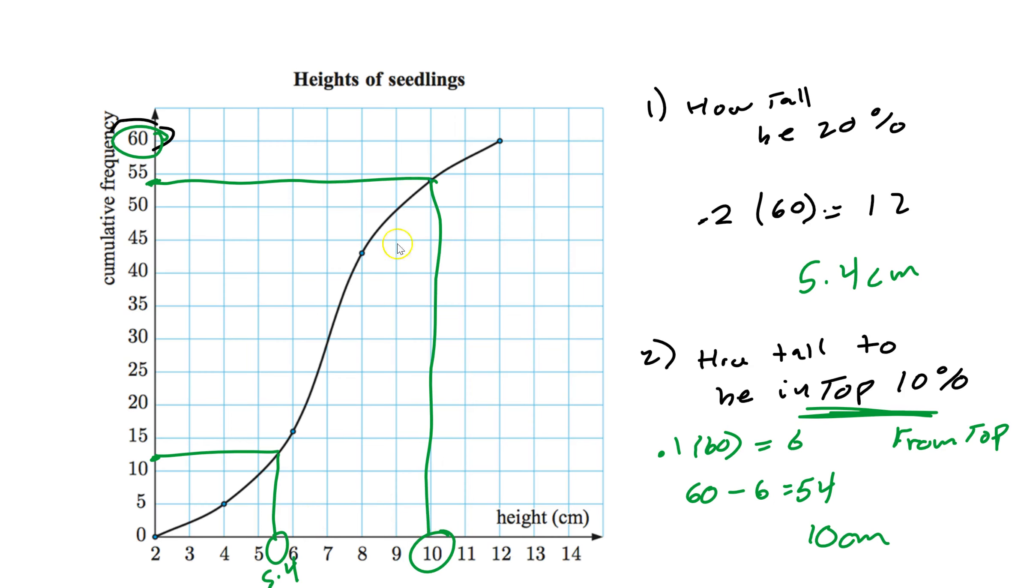So this is a general thing that I want you to keep in mind. If they give you a percentile, you just multiply that percentile by the total, in this case 60. Then you go across and you go down. Now, if they ever say the top percentile or top whatever, then you go from the top. Keep that in mind. Same idea, but you go from the top. So you have to go from 60. If they give you a percentile, you go from zero. That's a slight difference.